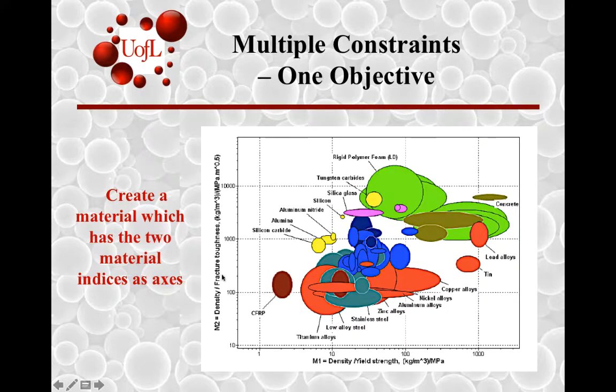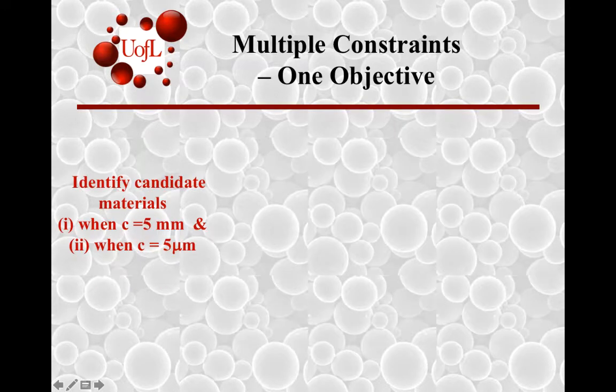So you have rho over fracture toughness on the y-axis and rho over yield strength on the x-axis. Look at these funky units - it's good to pay attention to units so that you're making sure that magnitudes are right. Again, you'll have ceramics dominating this portion and the metals dominating the lower portion over here.